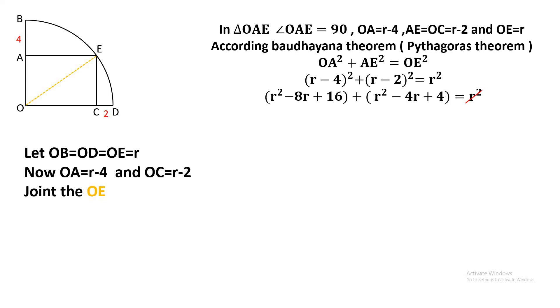Cancel the r² terms on both sides. After simplifying, we get r² - 12r + 20 = 0. We can solve it as (r-2)(r-10) = 0, so r = 2 or r = 10.